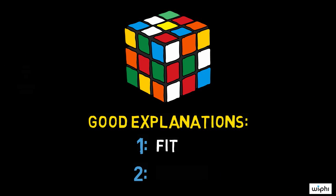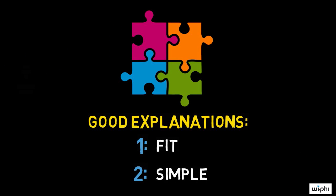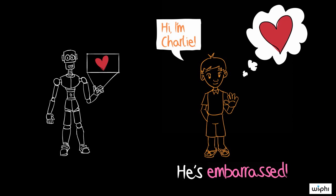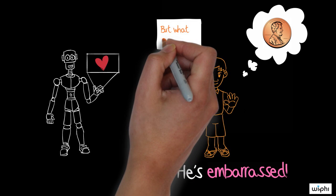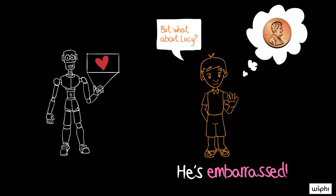Second, other things being equal, a simpler explanation is better than a complicated one. Here's another possible explanation for Charlie's blush. Maybe he misheard you and thought you said that Penny had a crush on him, and so he's embarrassed to learn about Penny's crush, not Lucy's.